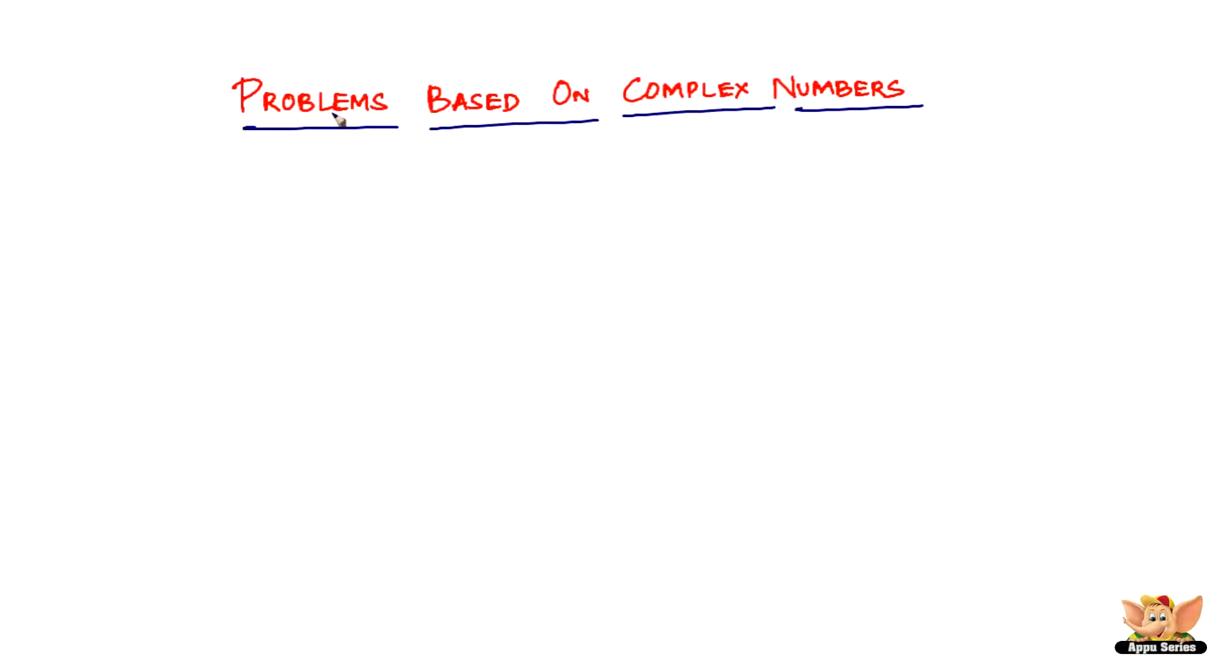In this video let us solve problems based on complex numbers. Here we've got a problem which says express the following in the form a plus ib, and we have minus 5i times 1 by 8i. So what you have to do is just multiply this.